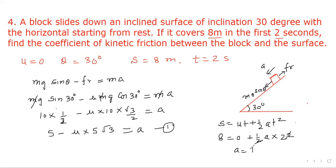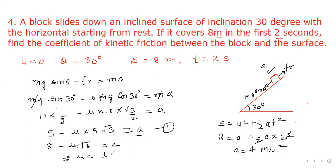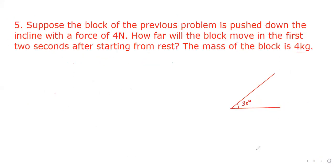Substituting a = 4 into the equation: 5 − 5√3 μ = 4, so 5√3 μ = 1, giving μ = 1/(5√3), which simplifies to approximately 0.11. Now let's take the next question.